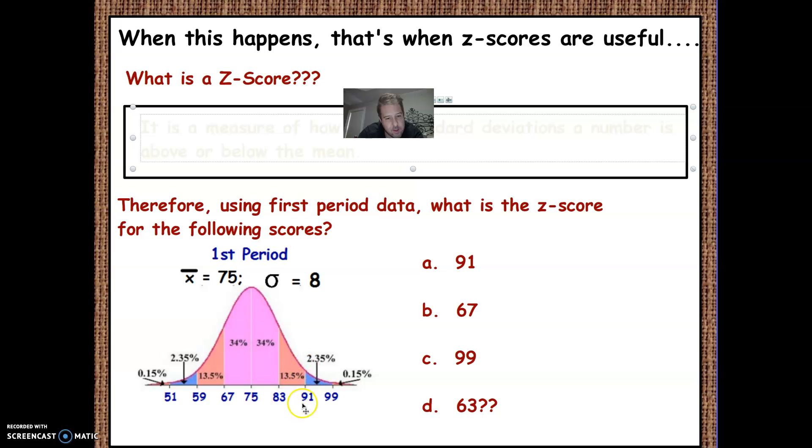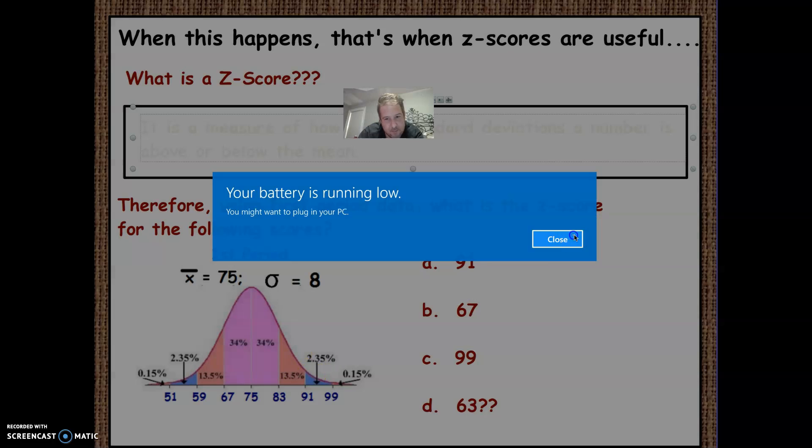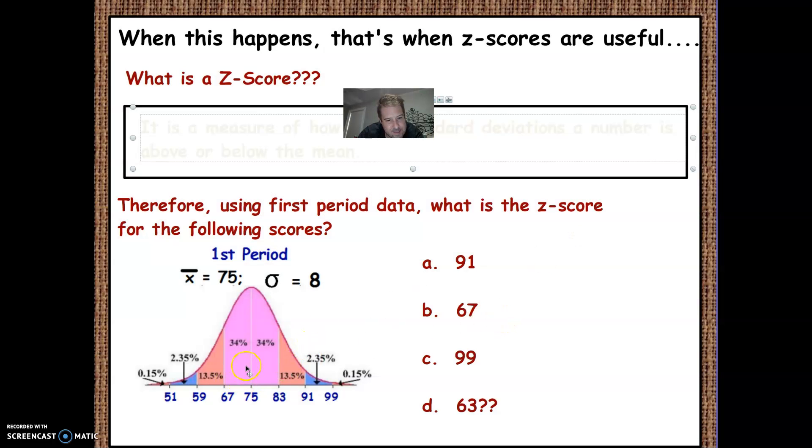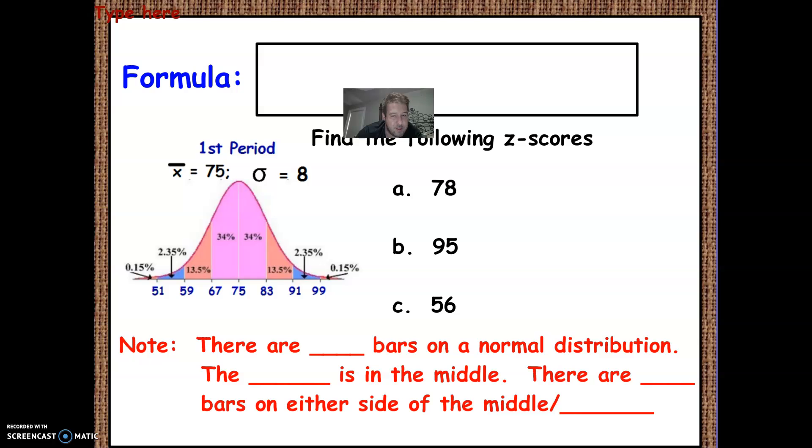So the way to find the Z score, okay, so 91, so this would be a Z score of 2 because it's 2 standard deviations above the mean. 67 is 1 standard deviation below the mean. 99 would be 3 deviations, 1, 2, 3 deviations above the mean. So the Z score would be 3. And 63, 63, keep in mind, is in between here. So that would be negative 1 point something. We're going to need to find that point something.